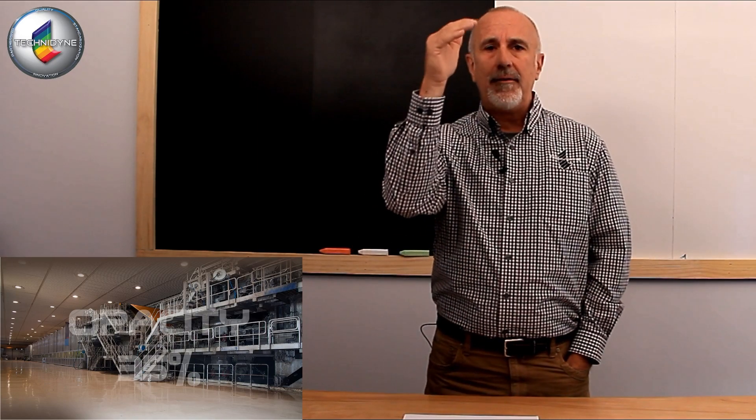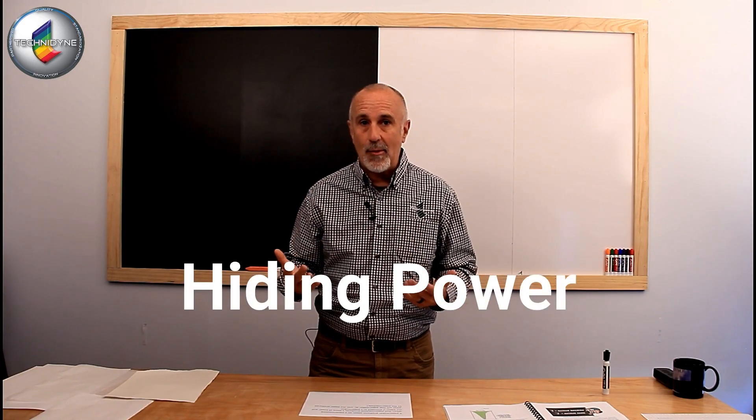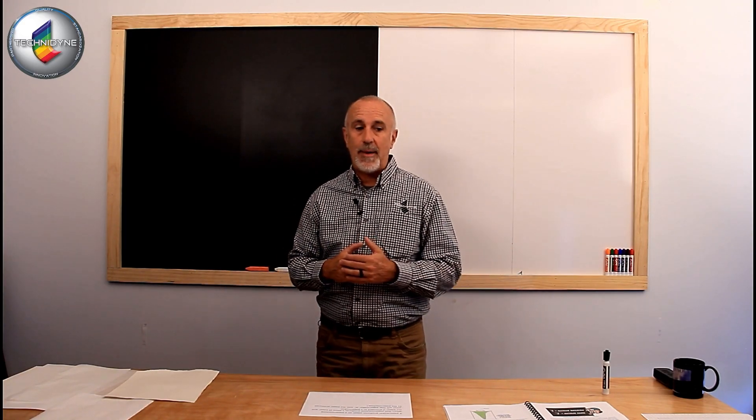And so, there we were at 100. We went to 70. We went to 35, and it gave, hopefully, a good visual illustration of what we're talking about when we discuss opacity, because in reality, that's the same for what we do in the paper and the flexible packaging industry. We're looking at how well a single sheet hides what's behind it. It is hiding power that we're looking for when we talk about opacity.